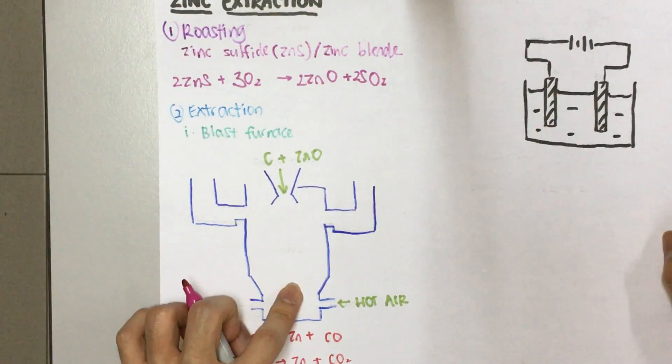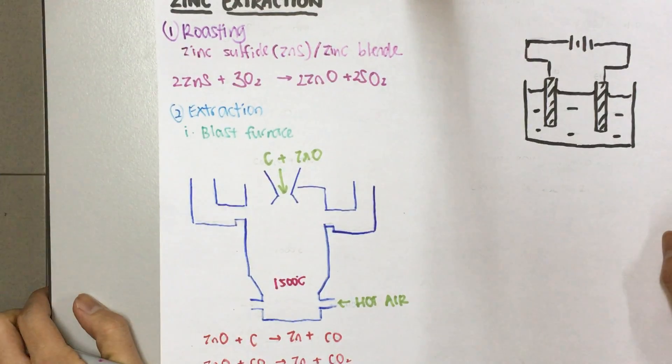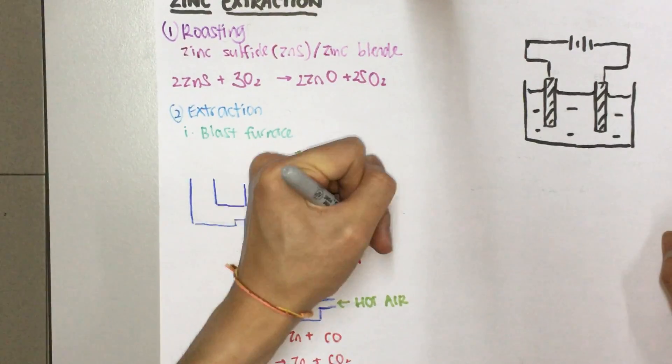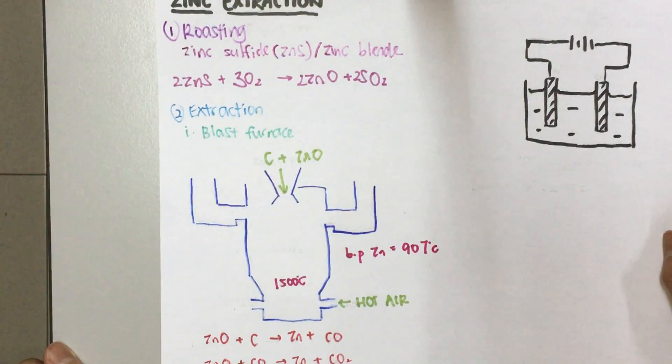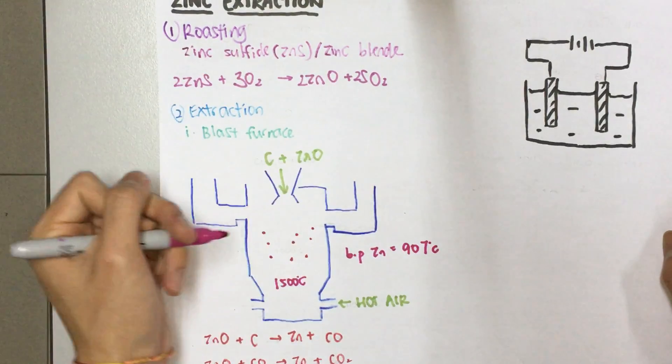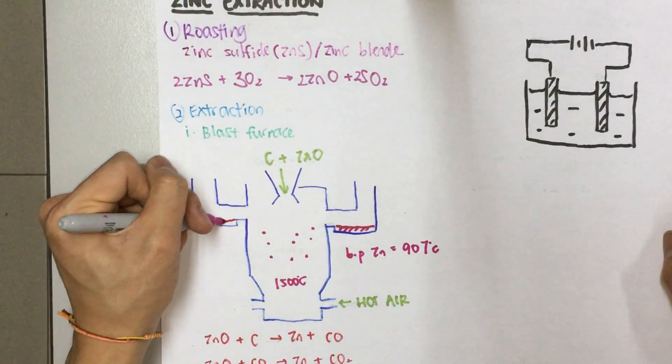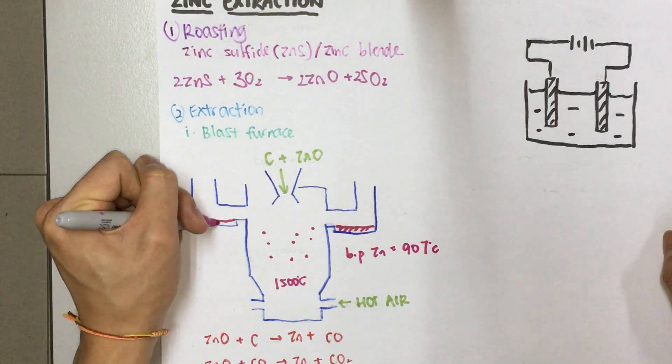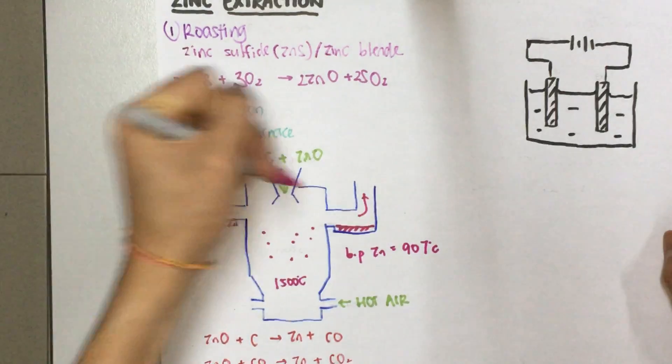Because it's very hot over here, it's around 1500 degrees Celsius. And the boiling point of zinc is actually 907 degrees Celsius. So what's going to happen is, the zinc produced will be vaporized up to here, where it can be condensed and collected in its molten state. And of course, the waste gases will be escaping by here.